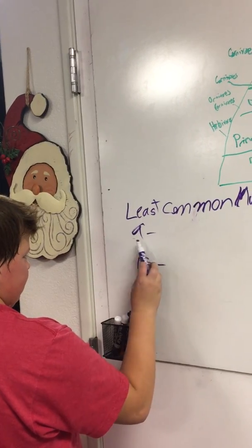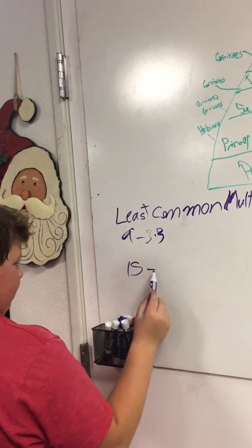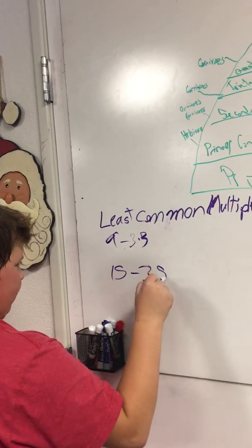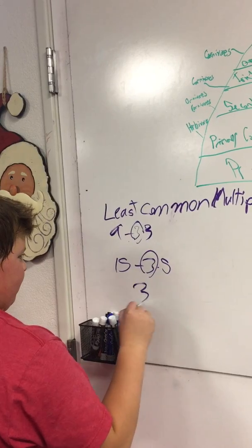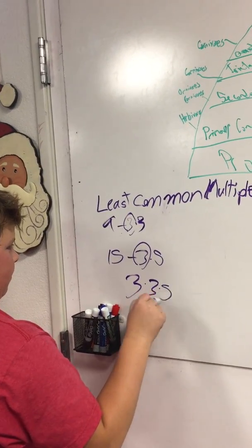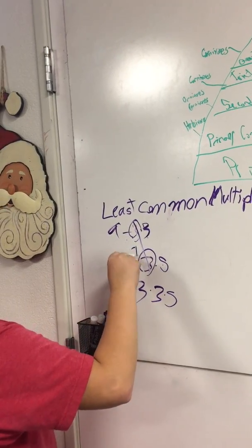You factor the 9, which is 3 times 3. Then you factor the 15, which is 3 times 5. You see that two 3's are common, so you write 3 times 3 times 5. You add these two, but this is equal to 1, so they cancel each other out.